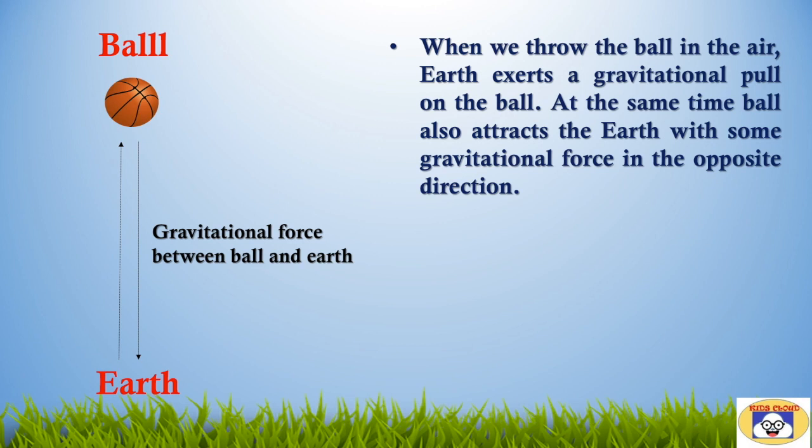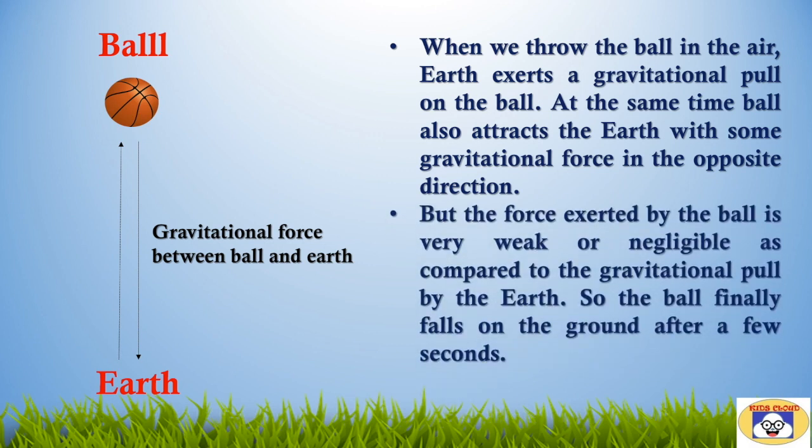When we throw the ball in the air, earth exerts a gravitational pull on the ball. At the same time, the ball also attracts the earth with some gravitational force in the opposite direction. But the force exerted by the ball is very weak or negligible compared to the gravitational pull by the earth, so the ball finally falls on the ground after a few seconds.